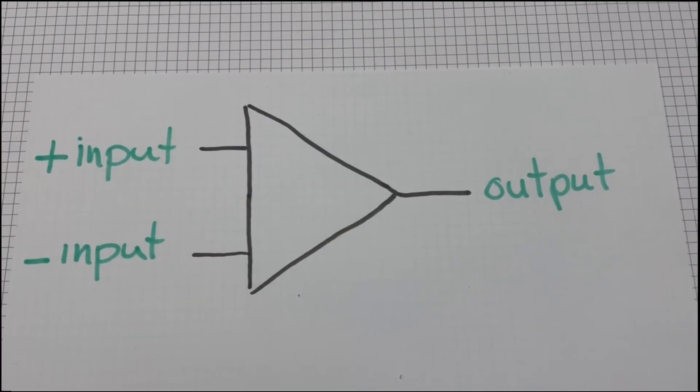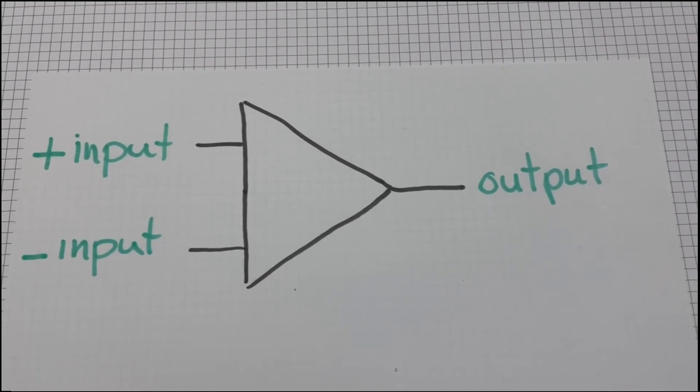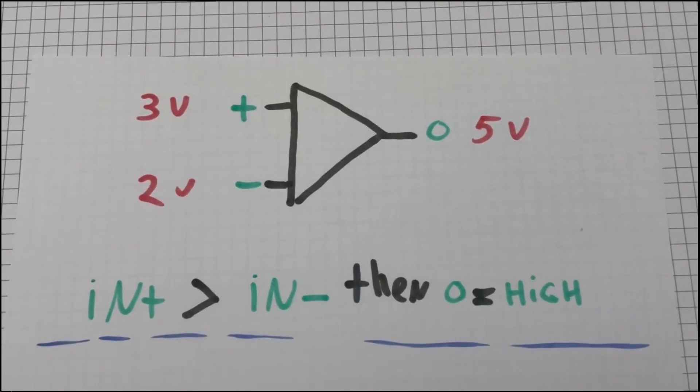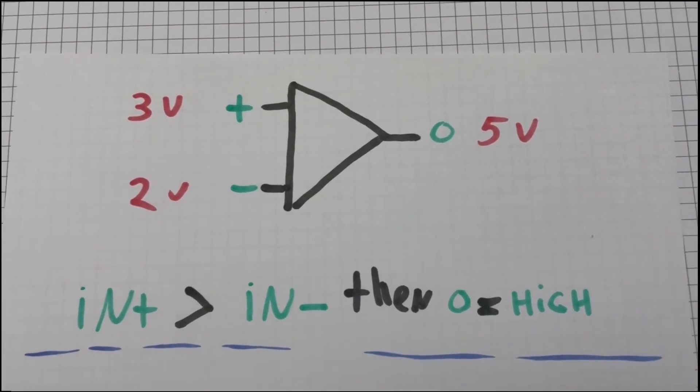An op-amp is a circuit that has two inputs and one output. And that output changes based on what these two inputs are seeing. A generic op-amp, which this is, follows the following conditions.